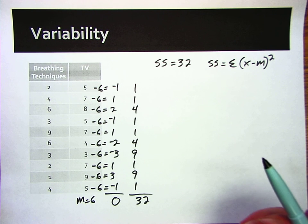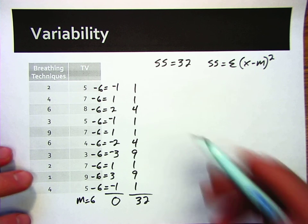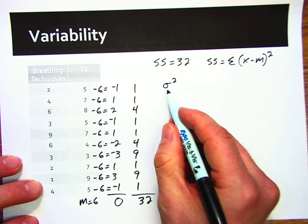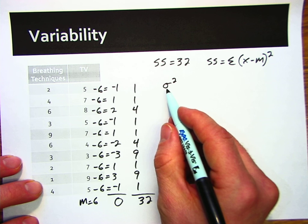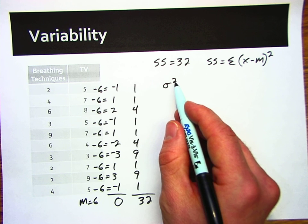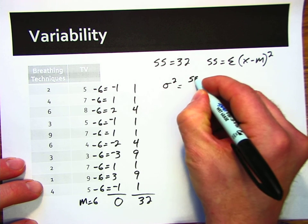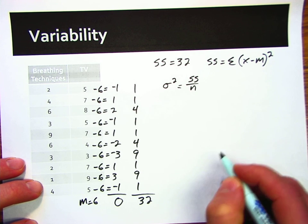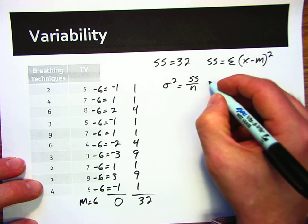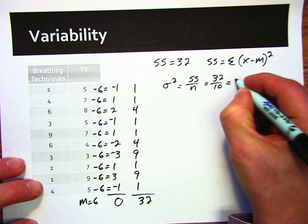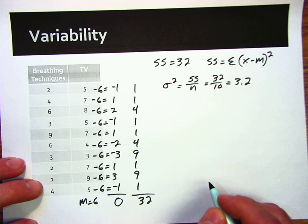Now the sum of square deviations by itself isn't extraordinarily informative to us either. What we might think of what we want to do is get an average of that, then. That average is what we call the variance. And here's a symbol for that. This is lower case sigma squared. And that stands for the population variance. Sum of squares divided by n. We're getting an average for this. 32 divided by 10. 3.2 is our variance.